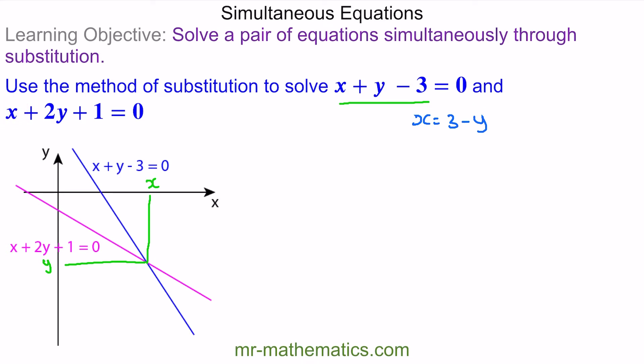Now all I'm going to do is substitute this expression for x in place of this one here. So x, which is 3 minus y, plus 2y plus 1 equals 0. Now you can see we have one equation with one unknown.